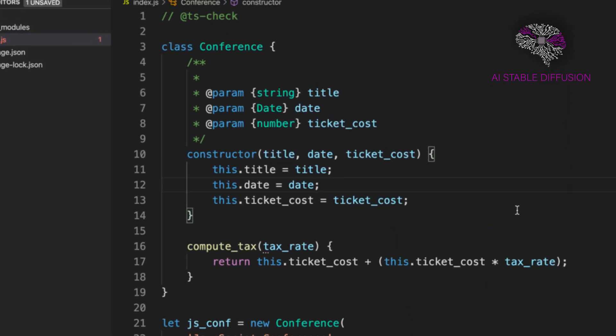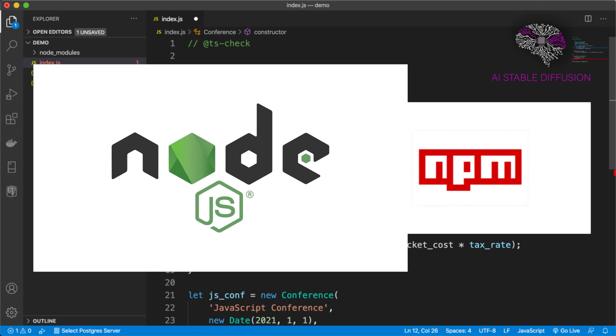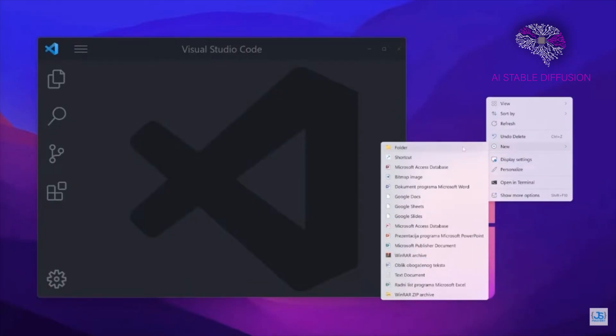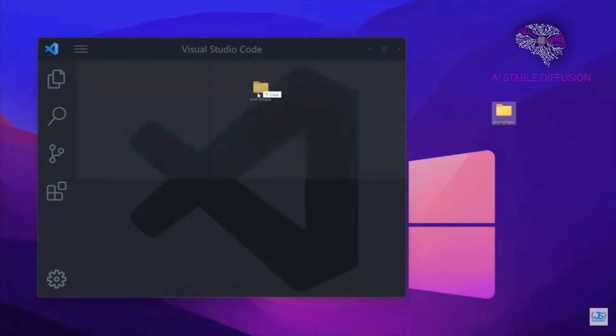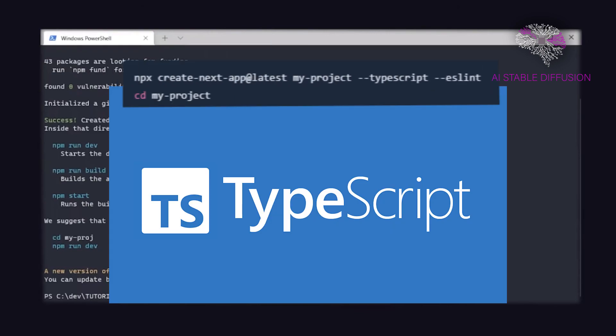Before we start, make sure Node.js and npm are installed on your device or computer. In addition, if you don't have an account on Vercel, you can open one. Now let's start by generating a brand new Next.js project using TypeScript and eslint. This command will build a new Next.js project in the directory MyProject that supports TypeScript and eslint.